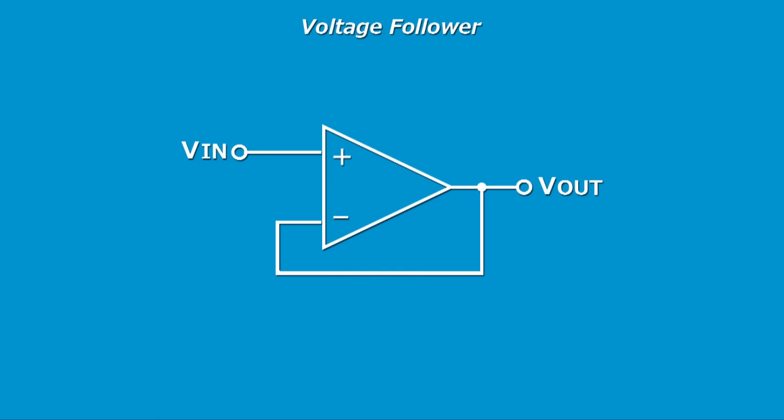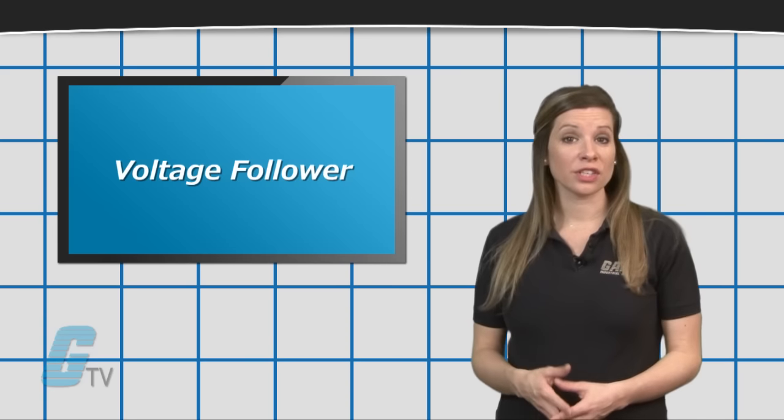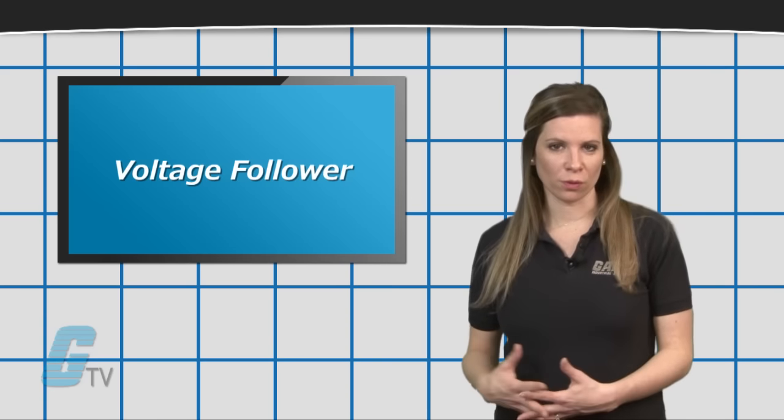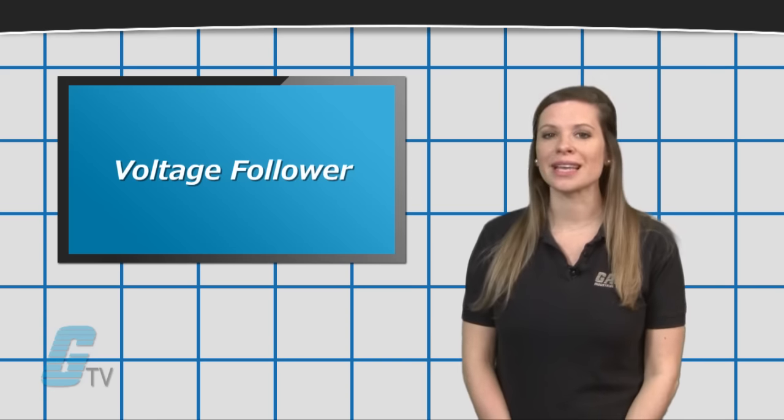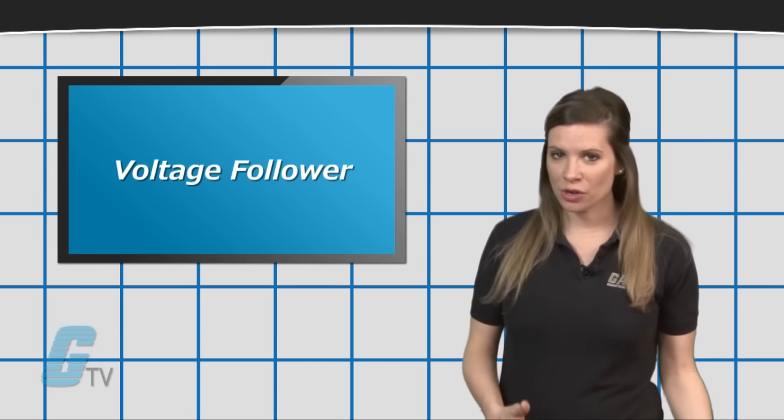That is used to boost the current available from a circuit without also increasing the voltage. They are referred to as a voltage follower because the output voltage directly follows the input voltage rather than altering it.